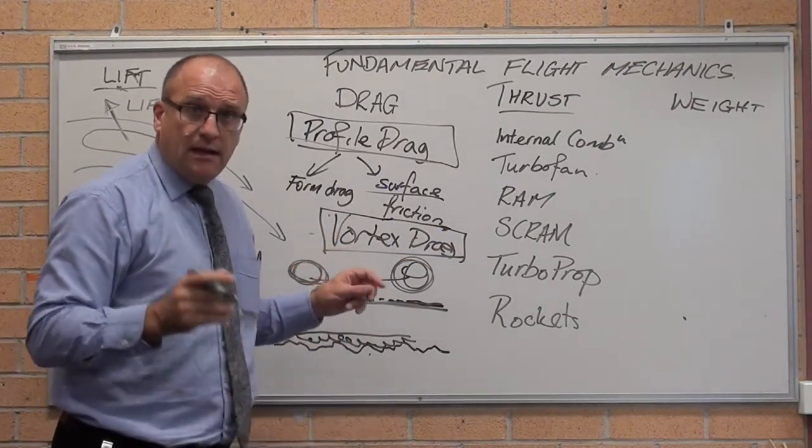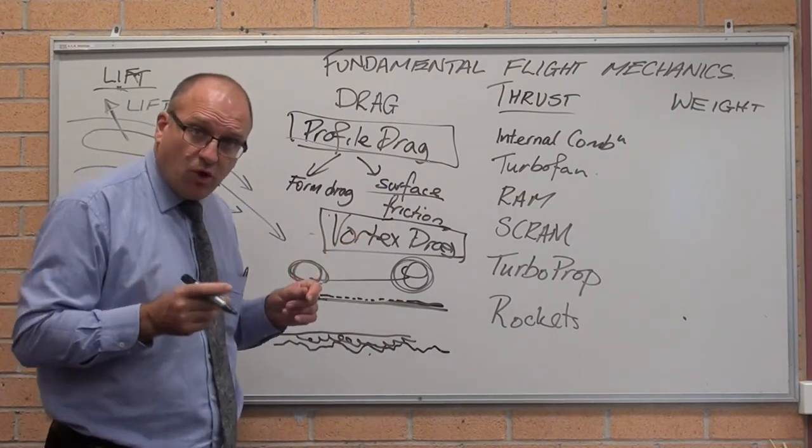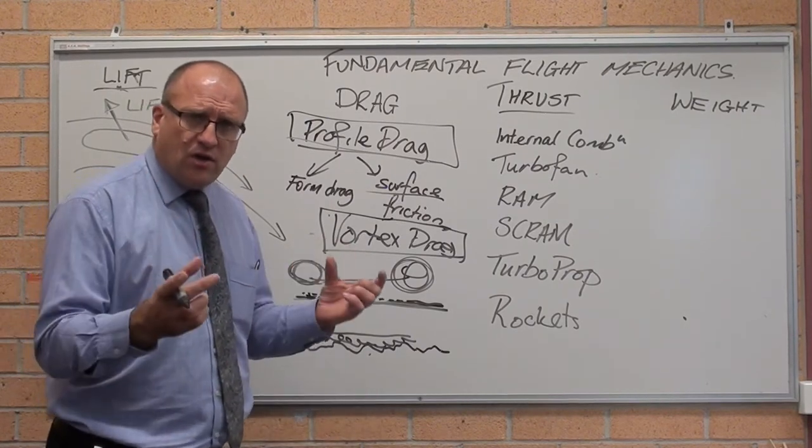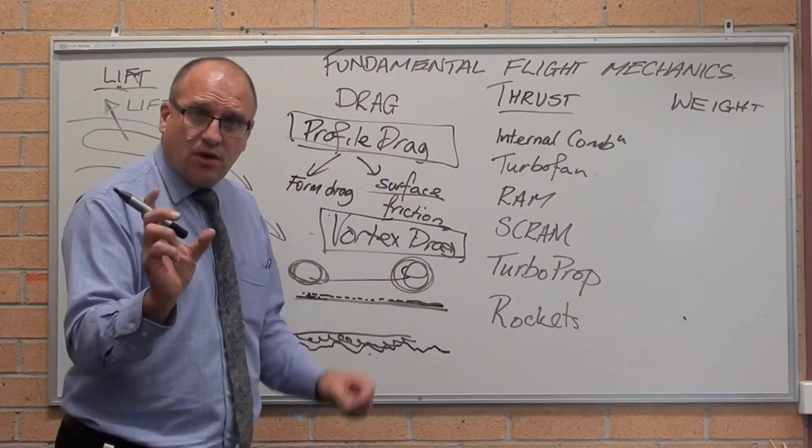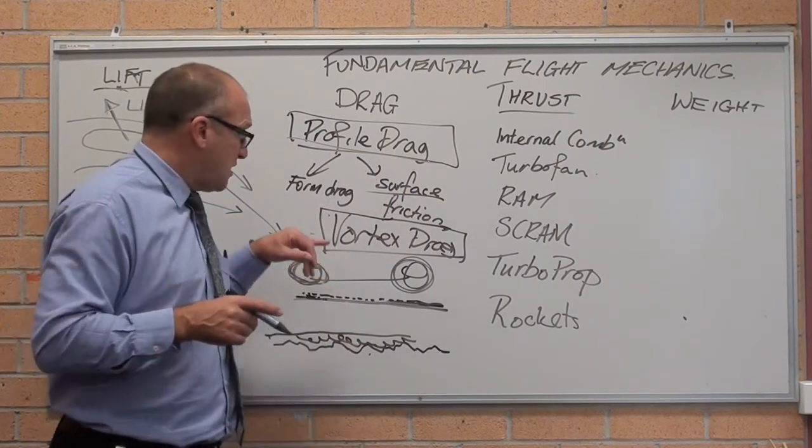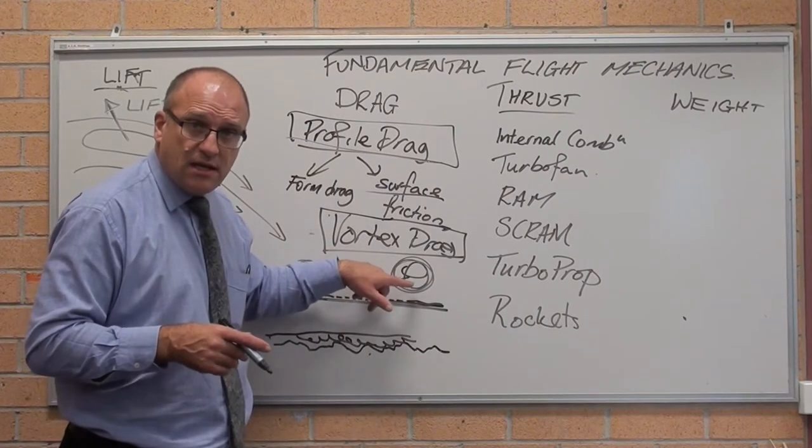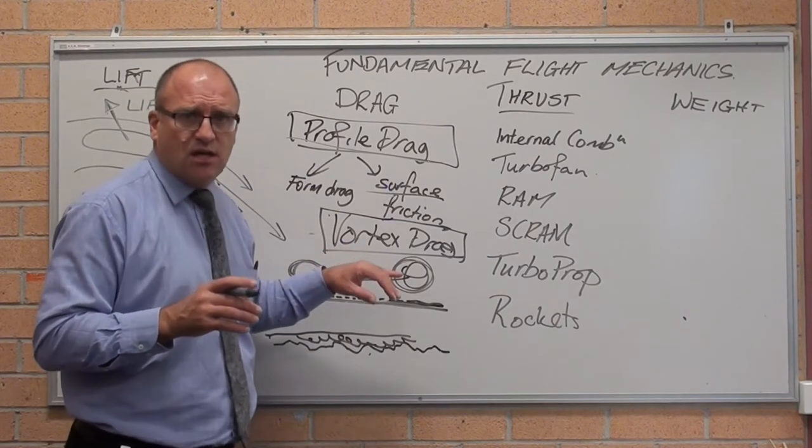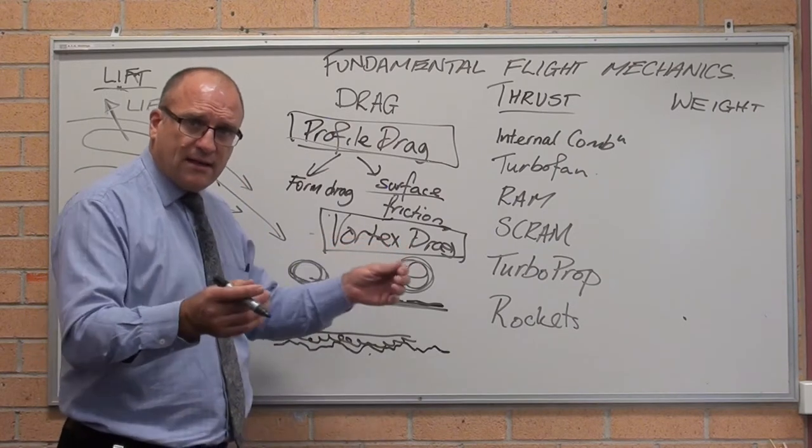Vortex drag is when the plane flies through the air, it creates tornadoes or vortices behind the aircraft. They're a function of how long the wing sees the air. The faster the plane goes, the shorter the time the wing is cutting through a given package of air, which means the vortices decrease. So the faster you go, vortex drag goes down. These tornadoes that it's producing tend to decrease in size, which means the less turbulence you create behind the plane, the less is sucking it back.